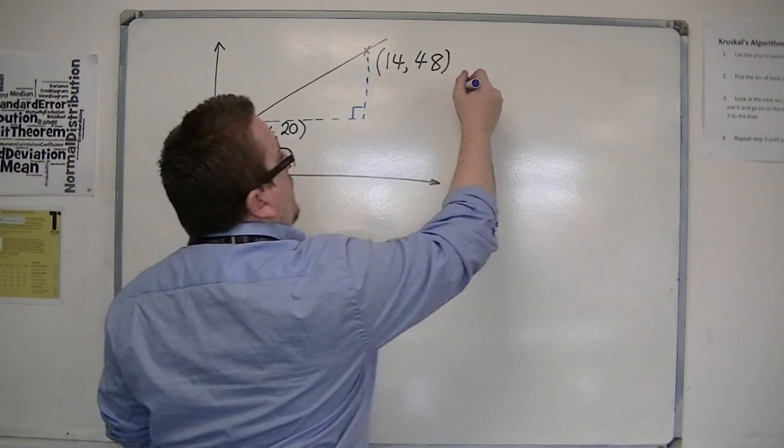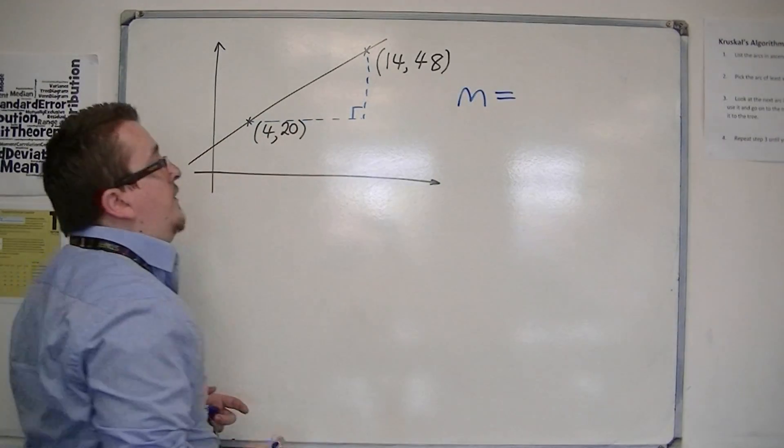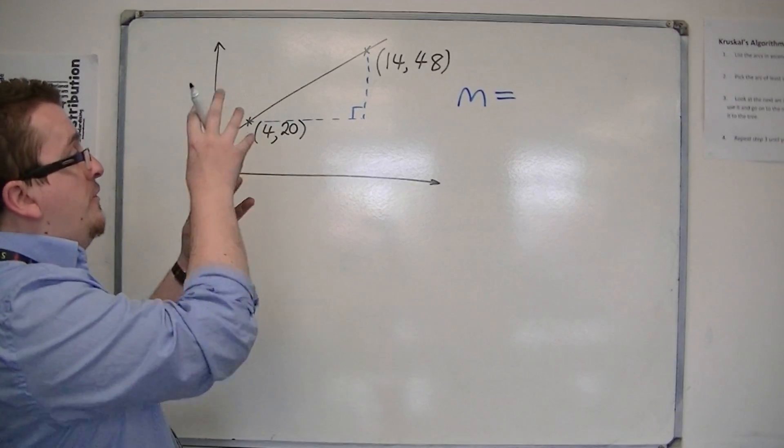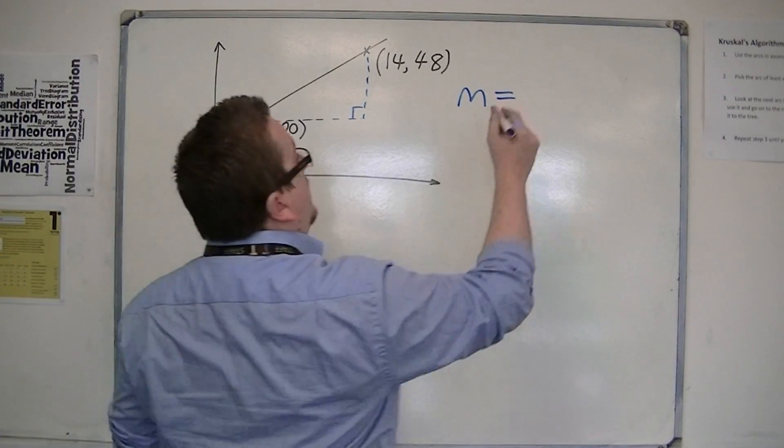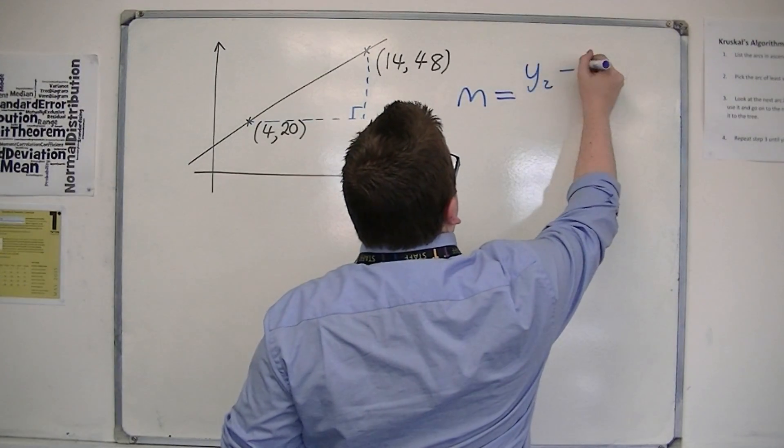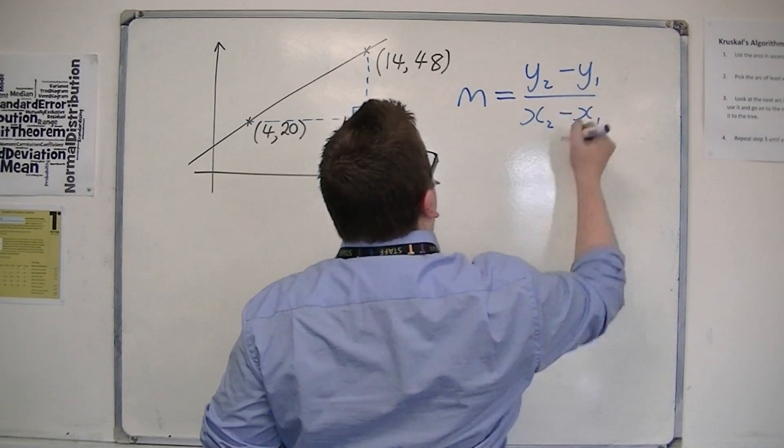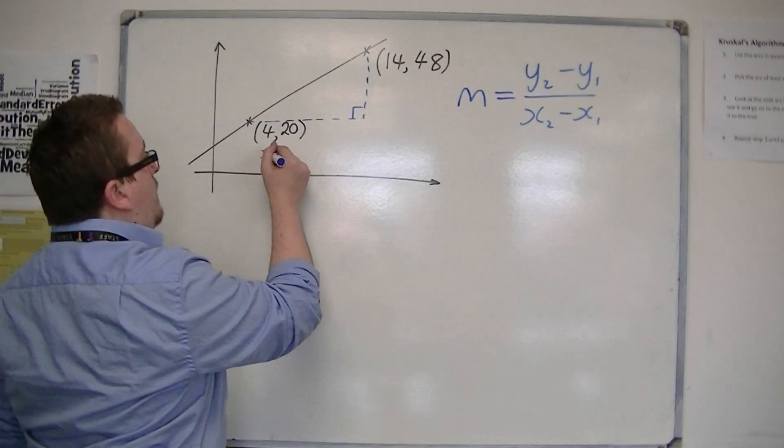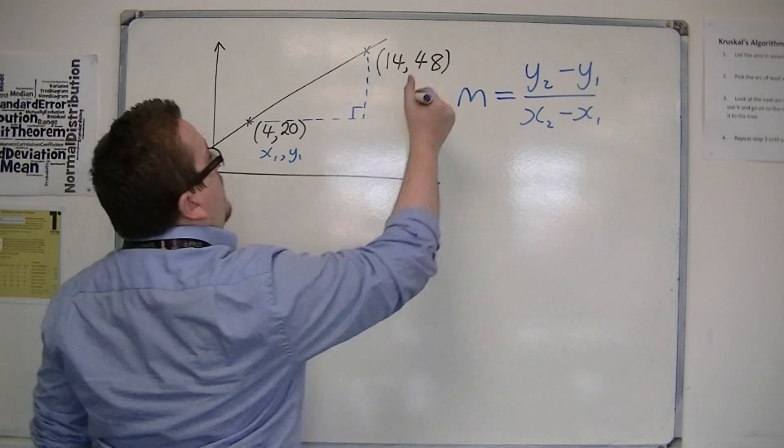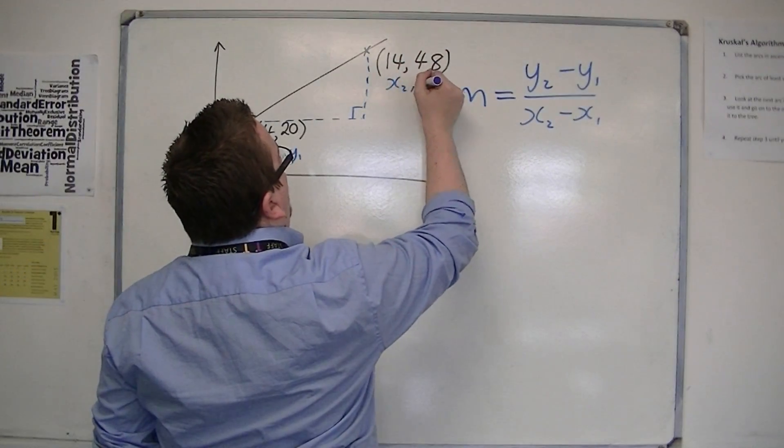The gradient of a straight line is the difference in the y's, the y-coordinates, divided by the difference in the x-coordinates. So that's y2 minus y1 over x2 minus x1, where this is x1, y1, and this is x2, y2.